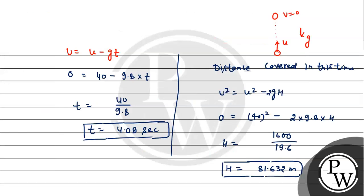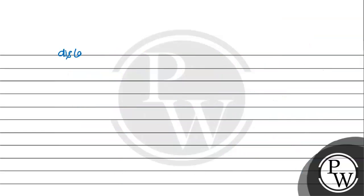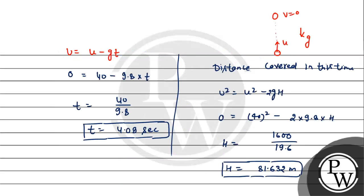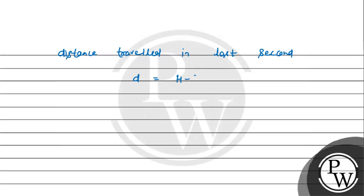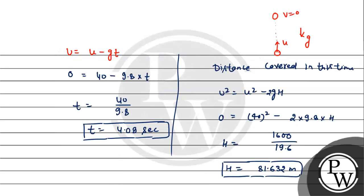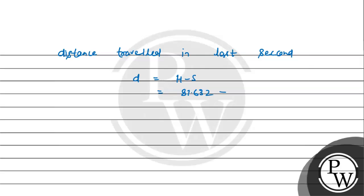The distance travelled in the last second equals h minus s: 81.632 minus 76.797, which gives approximately 4.9 meters. So the answer is 4.9 meters.